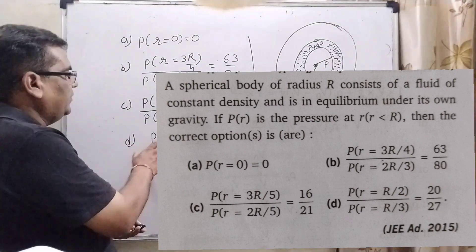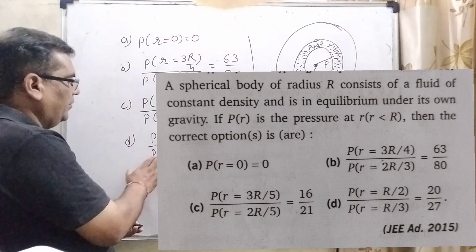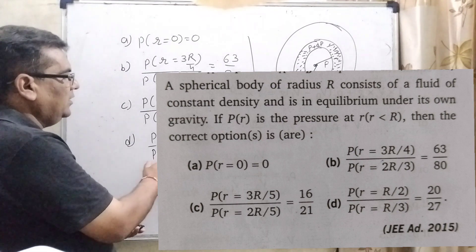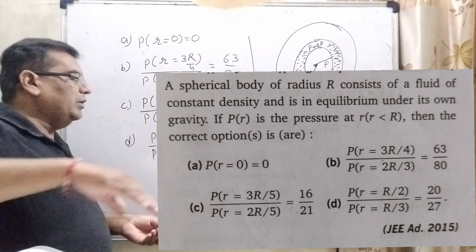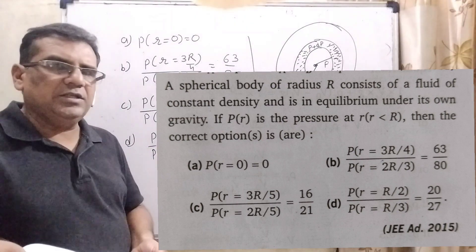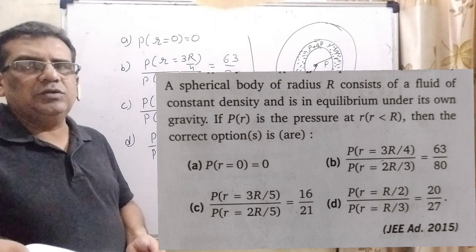Option D, P as a function of r equals R by 2 upon P as a function of r equals R by 3 equals 20 by 27. And this question is asked in JEE Advanced 2015.